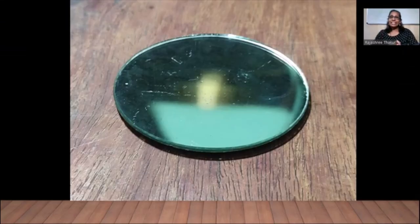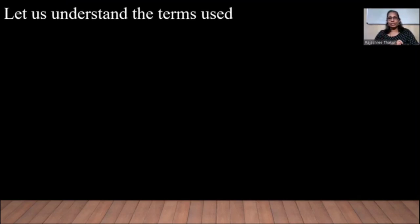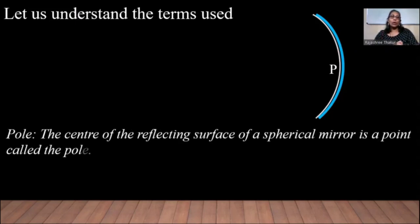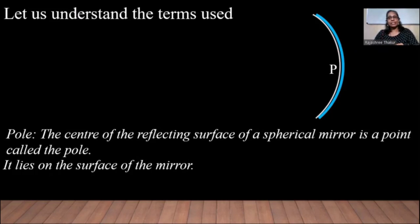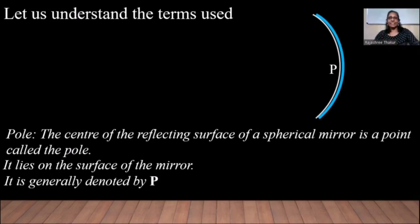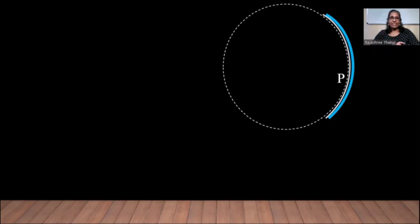Now let us understand the terms used with a concave or convex mirror. The central point of the mirror is called the pole of the mirror. It lies on the surface of the mirror and is generally denoted by the letter P. A concave mirror is a part of a sphere.